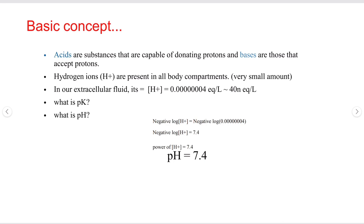Acids donate protons and bases accept protons. Hydrogen ions, or protons, are present in all body compartments but in a very small amount. In our extracellular fluid, it is 0.00000004 equivalents per liter, which we can also say is 40 nanoequivalents per liter. This is a very small amount.